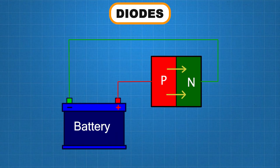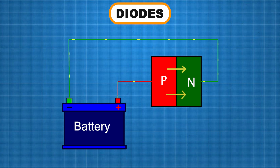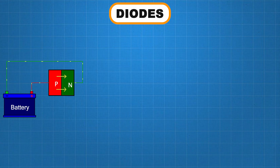If we connect the positive terminal of the battery to the P-type material and the negative terminal to the N-type material, the electrons from the N-type material move into the P-type material to fill the holes. These electrons are replaced by the flow of electrons from the battery. As a result, current flows through the diode with low resistance. This is called forward bias.